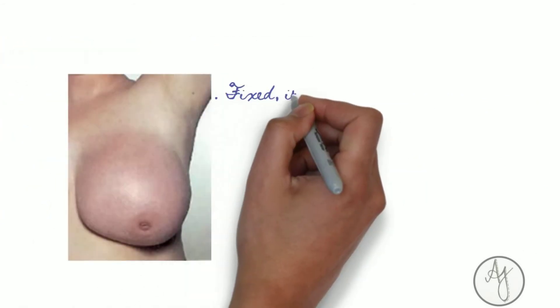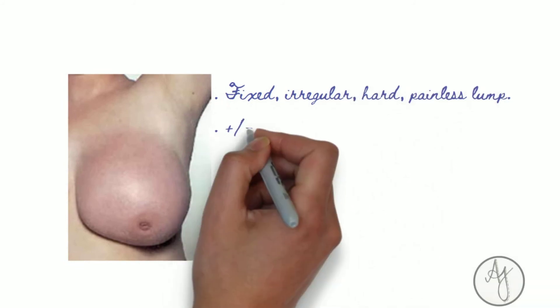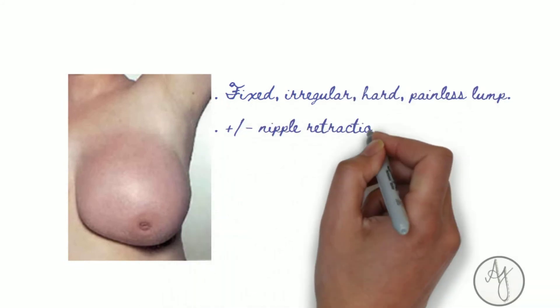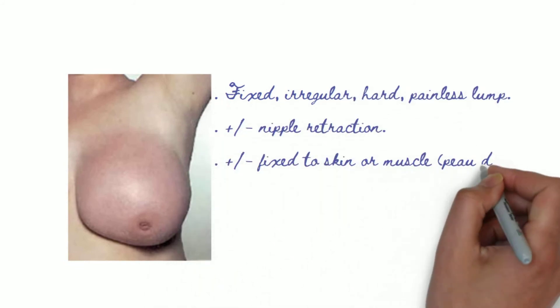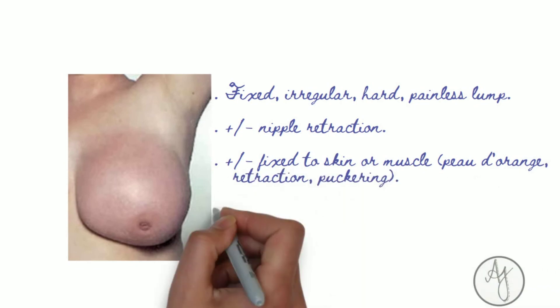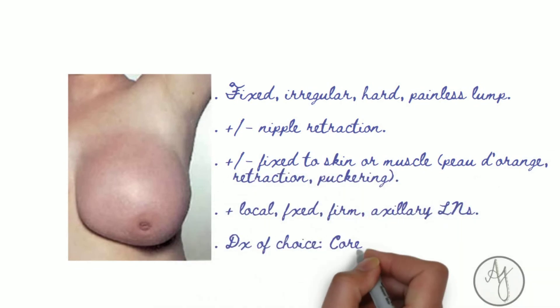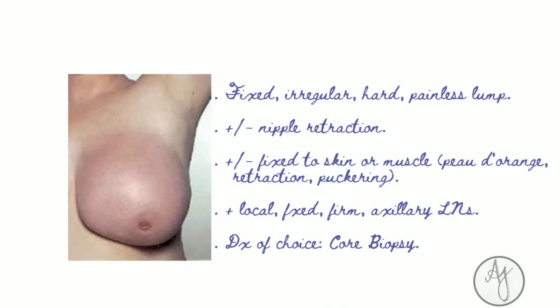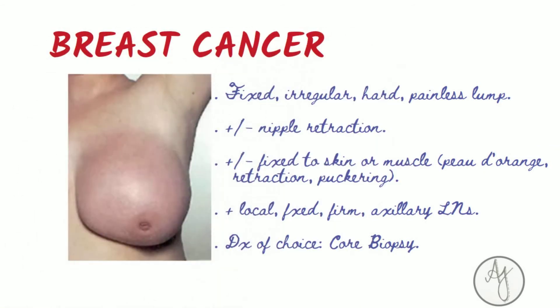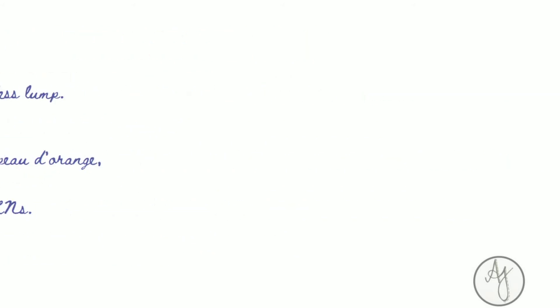If there is a fixed, irregular, hard, painless lump along with nipple retraction, or if the lump is fixed to the skin with peau d'orange appearance, or muscle involvement and local fixed firm axillary lymph nodes are present, it is usually breast cancer. The diagnosis is core biopsy.